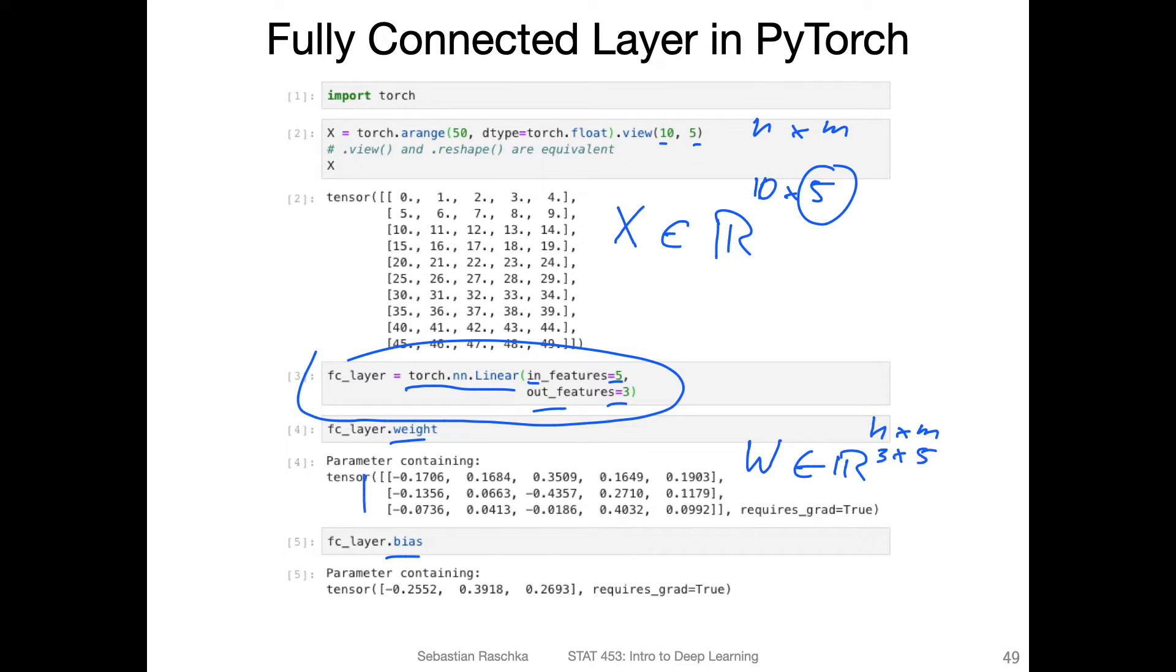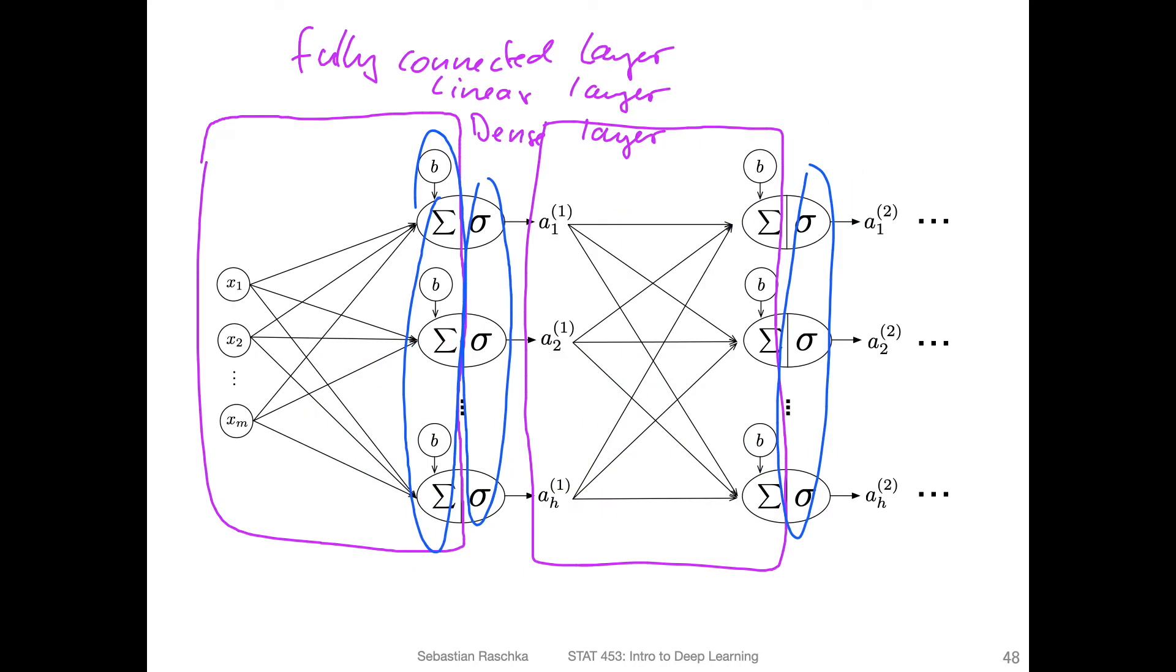You have three rows and five columns, so three by five dimensional. This five here matches with this five, the number of input features. The bias unit is equal to the number of output features, in this case a vector with three values.